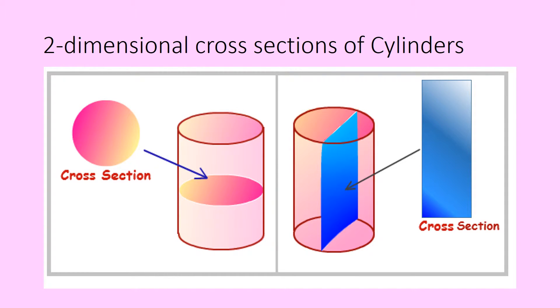Two-dimensional cross-sections of a cylinder. The one on your left is your horizontal cross-section. If you cut a plane through a cylinder, you're going to get a circle. If I do a vertical cross-section, you're going to get a rectangle.